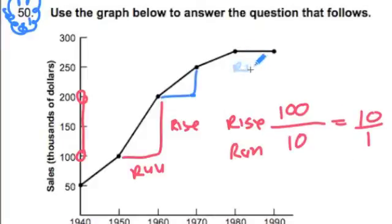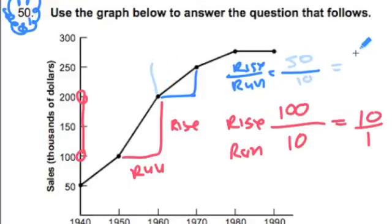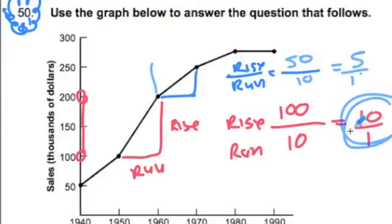Again, we're thinking about rise to run relationship, rise to run, which one has the greatest slope. The rise on this one from 200 to 250 is just 50 over 10. So this one has a slope of 5 over 1. Again, this one's got the greatest slope. We could do these for all these. And we'd still see that this one has the greatest slope.